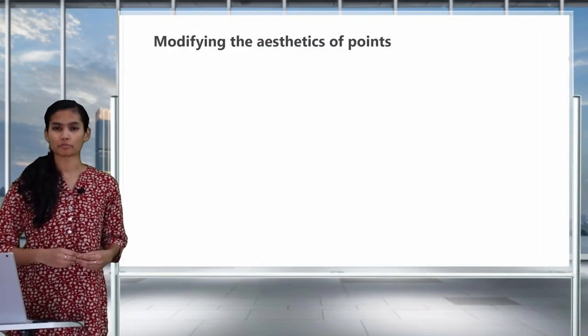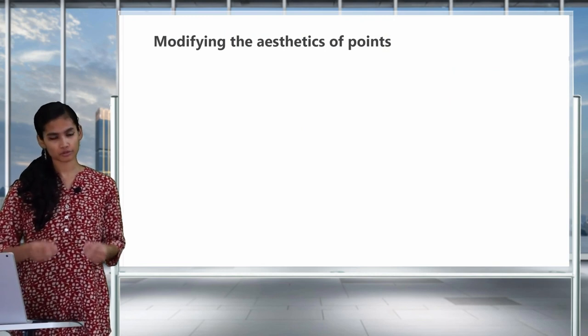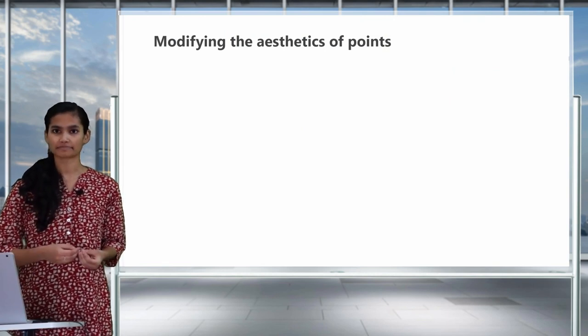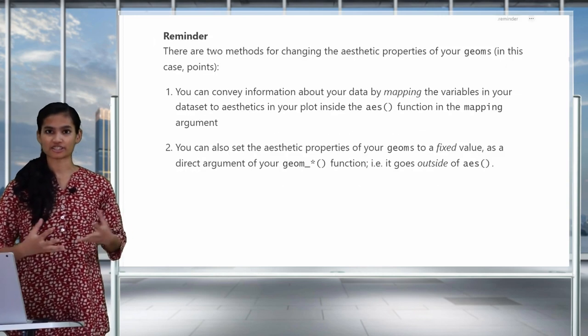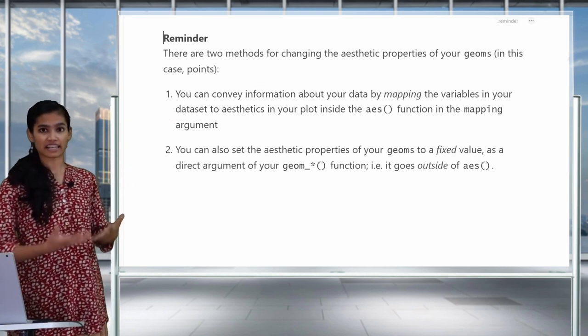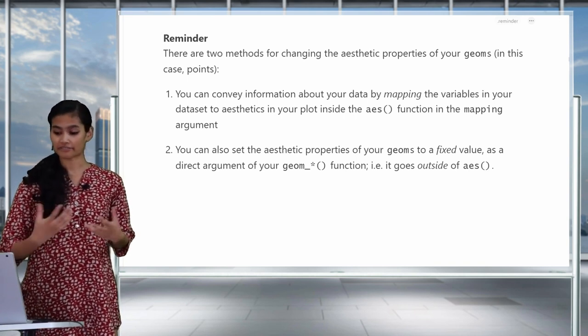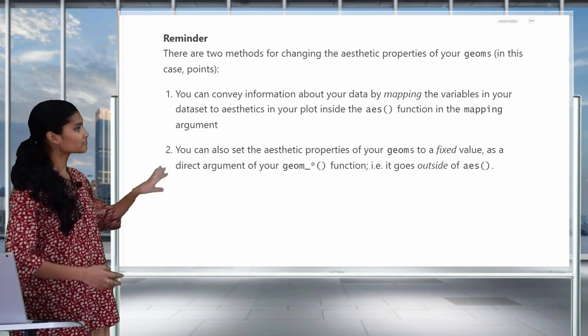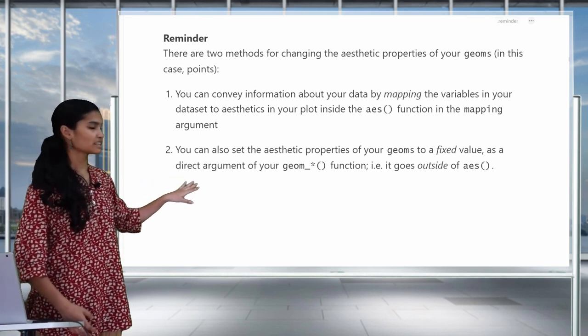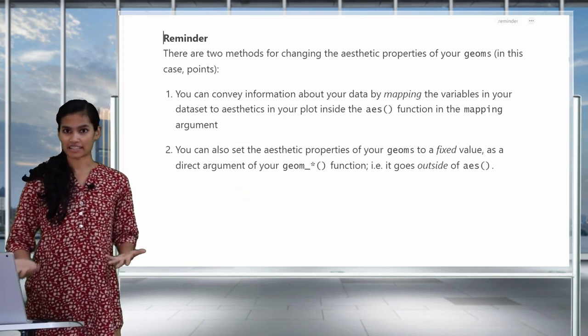Now let's modify the aesthetics of our points. As a reminder, aesthetics in ggplot refer to the visual properties of the geometric objects in your plot. There are two kinds of aesthetics that we change in ggplot. First of all, we can map information about our data onto aesthetics of a plot — you can color points according to values of a specific variable. The other way is by setting fixed aesthetics of our plot, which goes as a direct argument in our geometric function and doesn't represent any data.